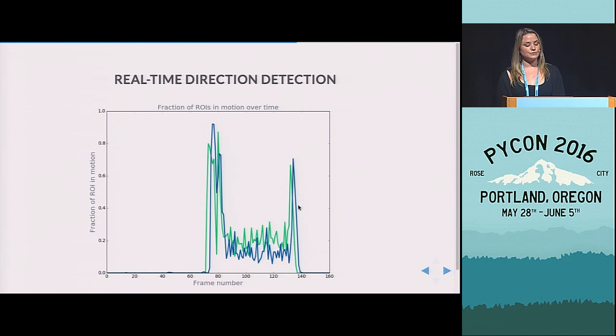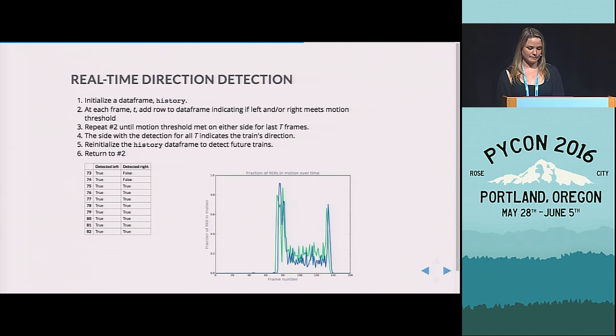And then the right ROI stays with motion longer than the left as it's leaving the frame. And so that allows us to figure out what direction it's going in. So there's a few different ways that you could do this. I've just been using a small data frame the size of what we've developed as the length of a train. And then once that data frame is full of having detected a train at least in one side for the whole length, we can figure out which side has detected longer, which allows us to then detect the direction of the train.